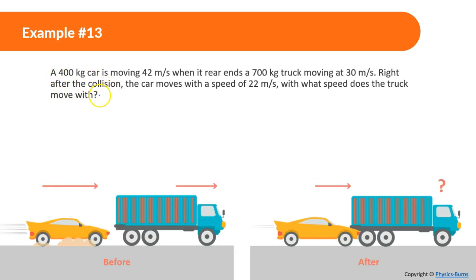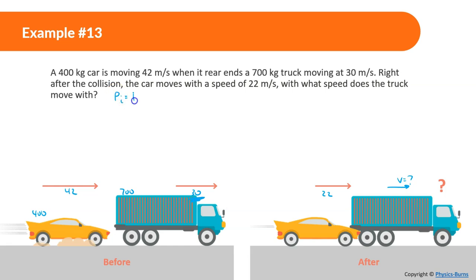Example 13: A 400 kilogram car moving at 42 meters per second rear-ends a 700 kilogram truck moving at 30 meters per second. Right after the collision, the car moves at 22 meters per second. We need to find the speed of the truck — we expect it to be more than 30 meters per second. Setting up momentum before and after: before, we have 400 kg at 42 m/s and 700 kg at 30 m/s; after, the 400 kg car is at 22 m/s and the 700 kg truck has unknown velocity.